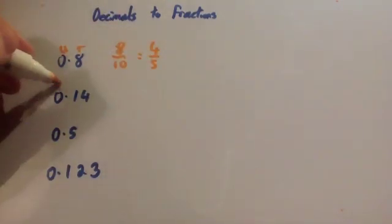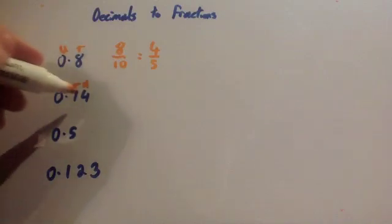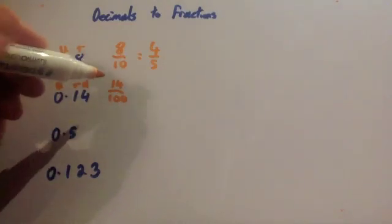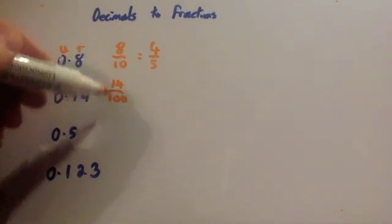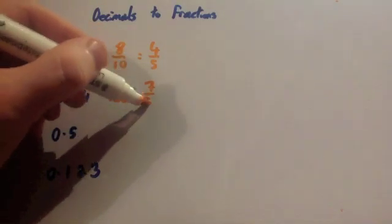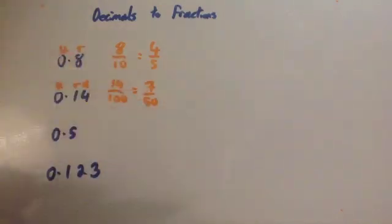Next one, you've got no units, 1 tenth and 4 hundredths, so that's 14 hundredths. Again, because this can be cancelled down, both of them are divisible by 2, so you get 7 over 50. And these have got no common factors, so you can't divide those by anything.